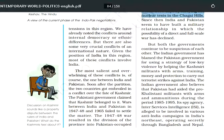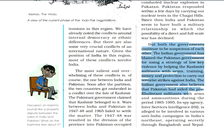Both countries tend to blame one another: if one has nuclear weapons, the other is also ready to acquire them. The fourth point is that both governments continue to be suspicious of each other. The Indian government has blamed the Pakistani government for using low-key violence by helping Kashmiri militants with arms, training, money, and protection so that they can carry out terrorist strikes against India.